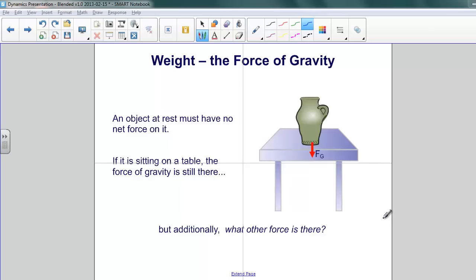Here's a common situation. We have an object here, a jug, sitting on a table. Two things we can notice about this. One is that the jug isn't going anywhere. It's at rest, and it's staying that way.